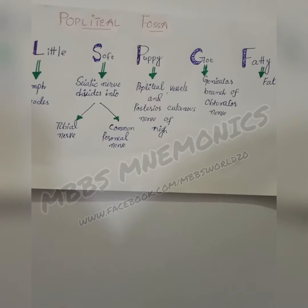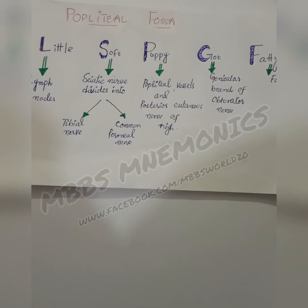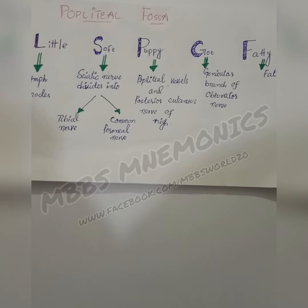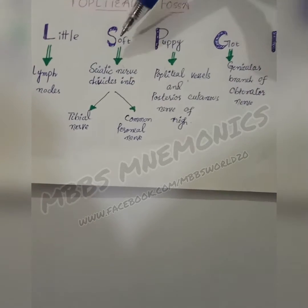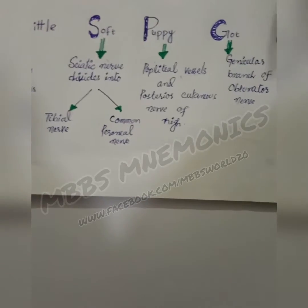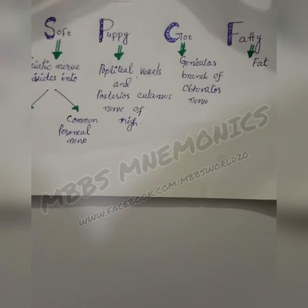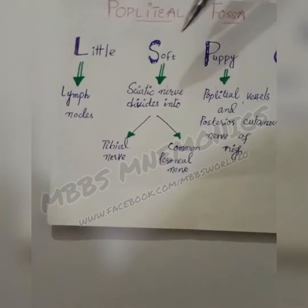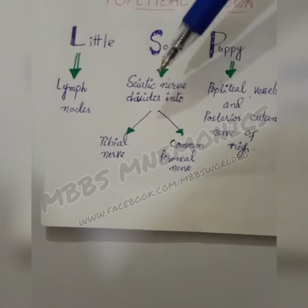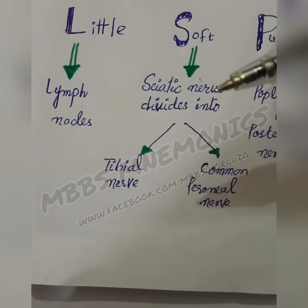Let us memorize the contents of the popliteal fossa. Here is an easy mnemonic: 'A Little Soft Puppy Got Fatty.' L stands for L4 lymph nodes — specifically the popliteal lymph nodes.